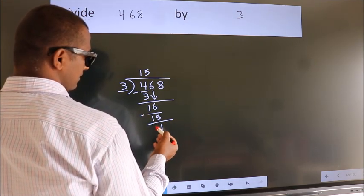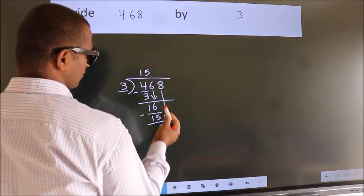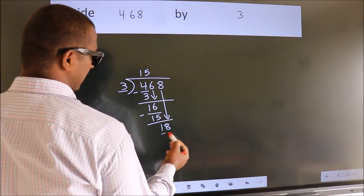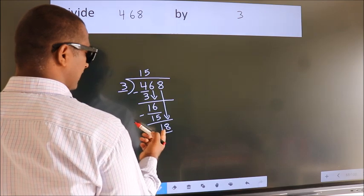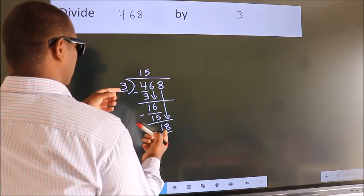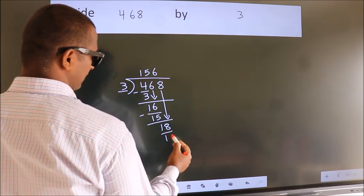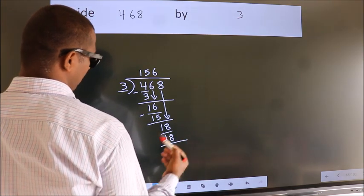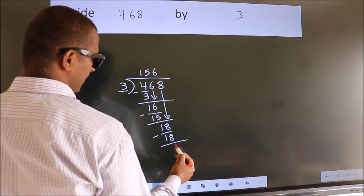After this, bring down the beside number. 8 down. So 18. When do we get 18? In 3 table. 3 times 6 is 18. We subtract and get 0.